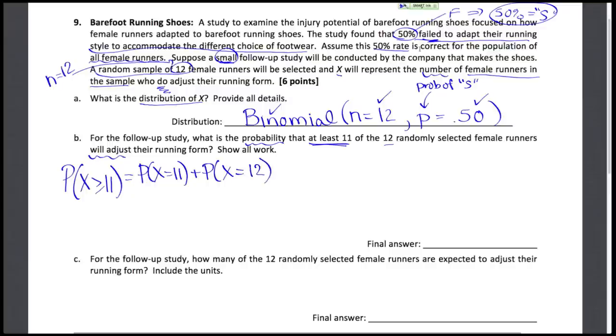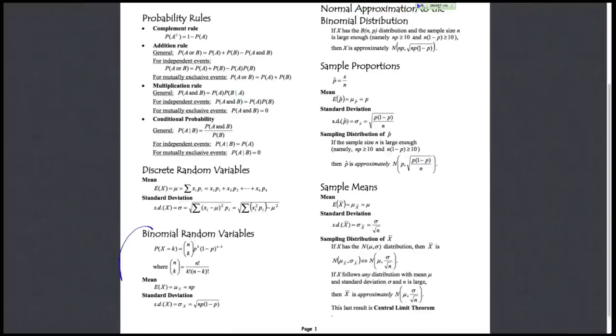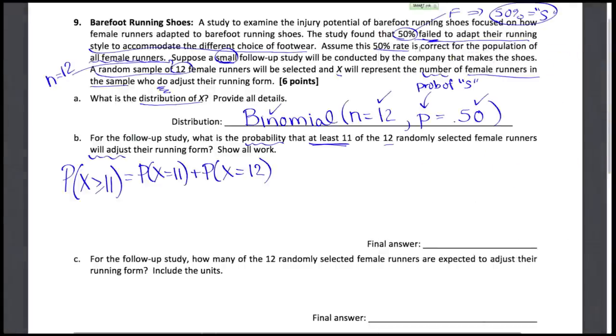Let's look at the formula card for the binomial random variable section. That section gives me the formula with the n choose k expression. So using that formula to work out our probability of at least 11: out of 12 I need to figure out how many ways could I pick the 11 that do adjust. The success rate is 50% raised to the 11 successes, and 1 minus that success rate, the failure rate which is also 50%, is raised to the remaining one person. Then I need to do that for 12 out of 12, choosing everybody with that success rate and nobody in the failure rate category left over.